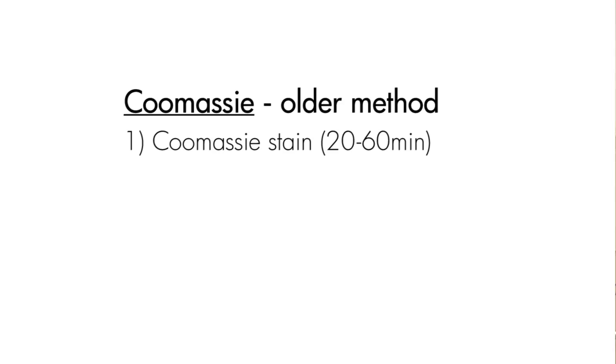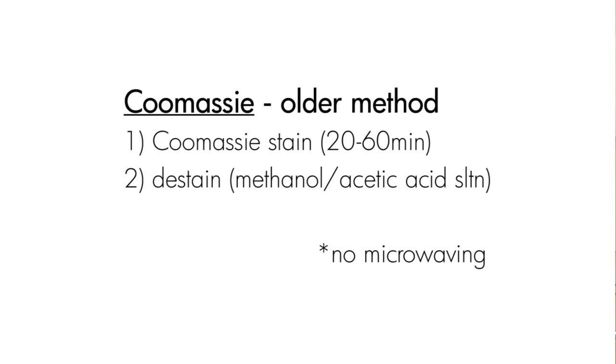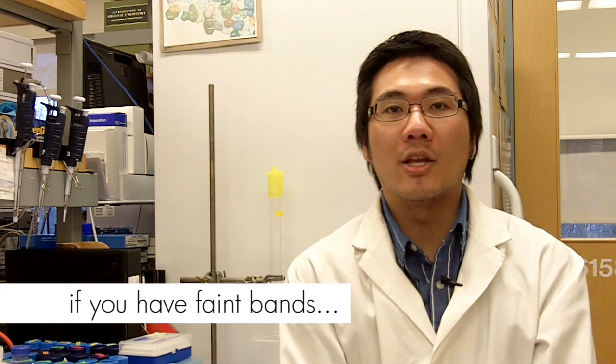So that's how you stain your gel using Page Blue. Now I'm going to tell you how to stain your gel using Coomassie. You first of all take your gel and put it directly into your Coomassie stain. The staining time is about 20 to 60 minutes. After the staining is done, you take your gel and transfer it into a destaining solution which is made out of methanol and acetic acid. For this protocol, you do not need to microwave, but it does take a little bit longer compared to Page Blue.